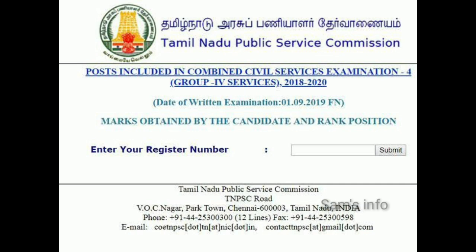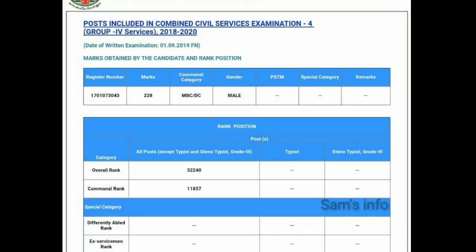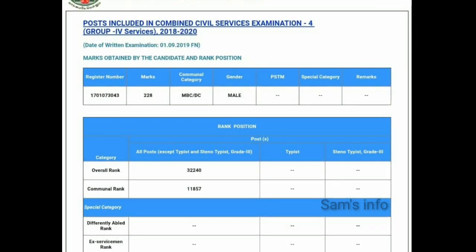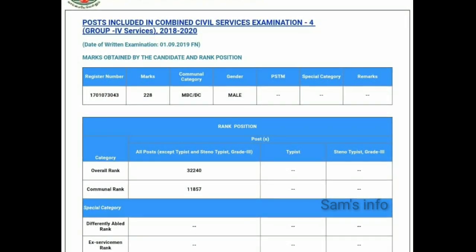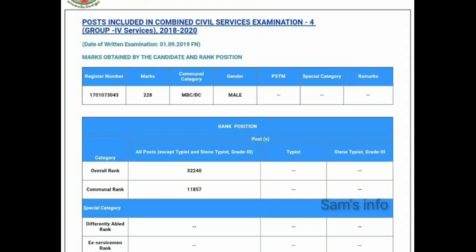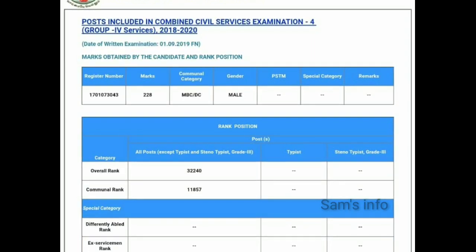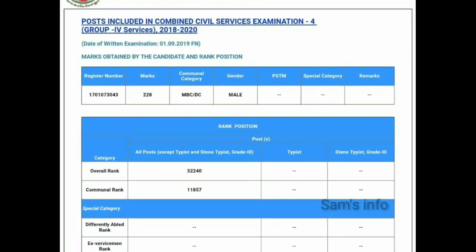The minimum is 56,000 people. There is also a communal rank. For example, if you belong to MBC, BC, or any other community, you can find your rank within that community.